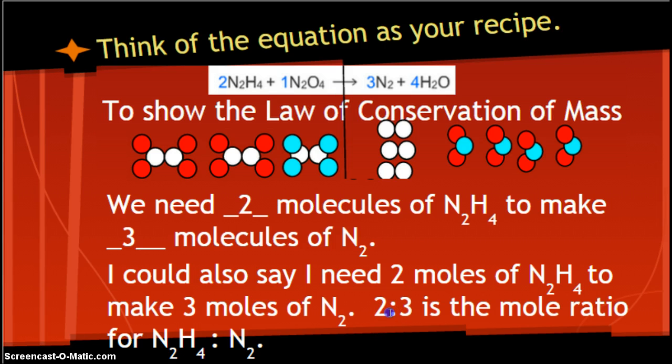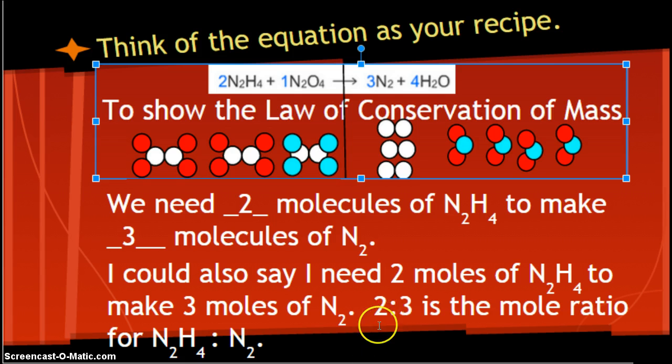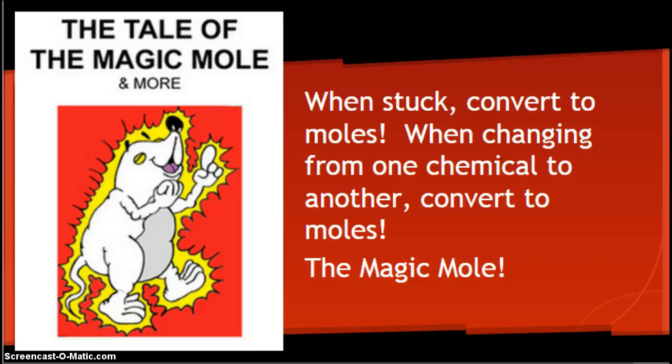I could also say I need 2 moles of N2H4 to make 3 moles of N2. I think it helps to think of these equations as your recipe. Try and think of it like something that you've done in real life. Hopefully you've made some type of food in real life. If not, you need to learn how to cook. We know that we need two of these in order to make three of those. The ratio is two to three or 2:3. If I have two of those, assuming I have enough of the rest of everything, I'm going to make three of those.